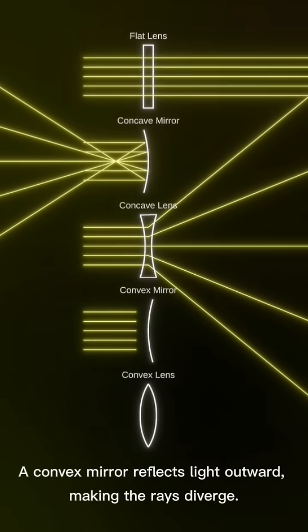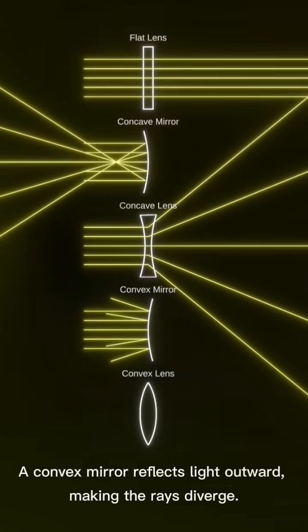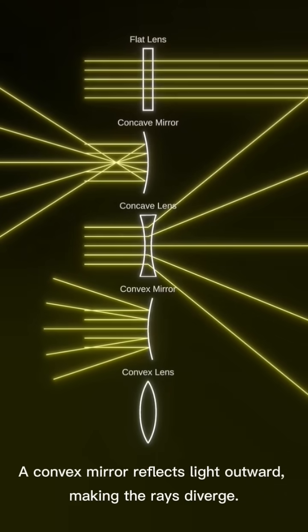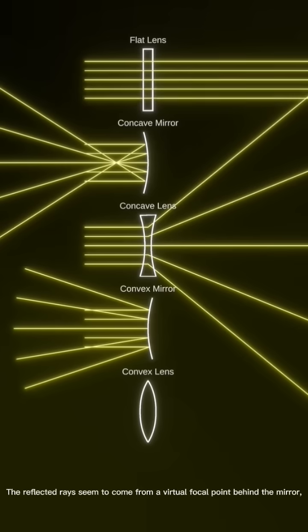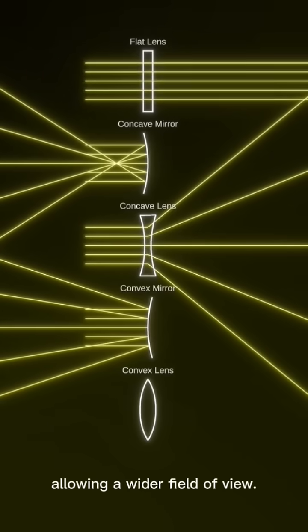Convex Mirror. A convex mirror reflects light outward, making the rays diverge. The reflected rays seem to come from a virtual focal point behind the mirror, allowing a wider field of view.